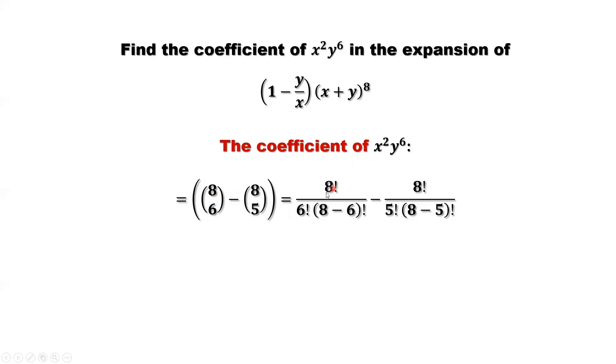So 8! divided by 6!(8-6)!, minus 8! divided by 5!(8-5)!. So here 6!, 8! we can cancel. We have 8 times 7. Here that's 2!. 2! is 2 times 1. That's 2.